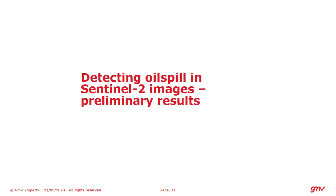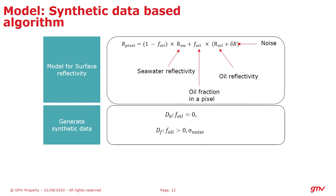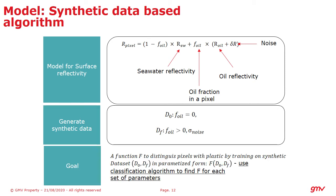Next we will talk about detecting oil spills in Sentinel-2 images. For that we first generate a synthetic database, where we use the reflectivity of a pixel, the reflectivity of oil, and the fraction of oil in the pixel along with noise. From this we create and train an algorithm which can differentiate between oil and oil-free pixels.